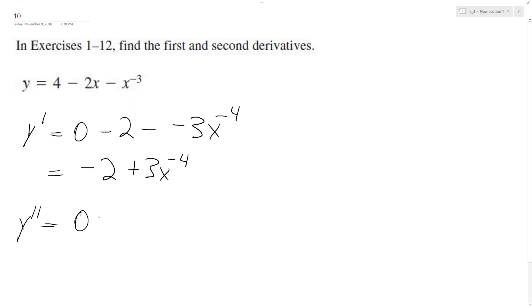The derivative of negative 2 is 0. Then we pull down the negative 4 times 3x raised to negative 5. So we get y double prime equals negative 12x raised to the negative 5th.